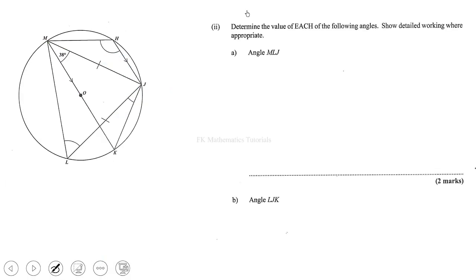So far we saw that angle HJM is 38 degrees and angle MJK is 90 degrees. Now we have to determine the value of each of the following angles, showing detailed working where appropriate. First, angle MLJ — we have to find the value of that angle.